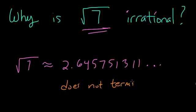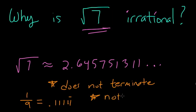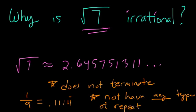But that's not it, right, because it's perfectly reasonable to have a fraction like 1 ninth, which equals 0.1111 and so forth, and that's rational because it has a repeating pattern. So in order for this thing to be irrational, it has to not terminate and not have any type of repeating pattern. That's the key.